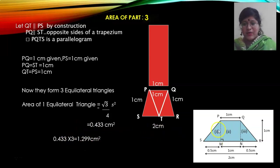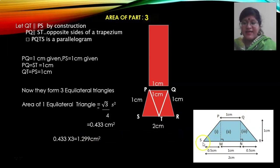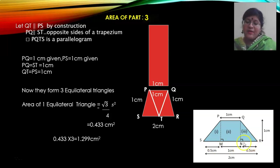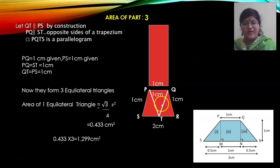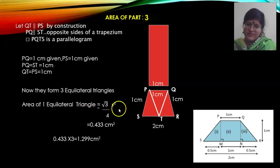You could also draw the height PM and take the height QN. The entire base is 2 cm, so from each end it becomes 0.5 and 0.5. But this is a fairly lengthy method. It is easier to use the equilateral triangle formula. We have found out the area of the third part using the formula: area of an equilateral triangle = (√3/4) × side².